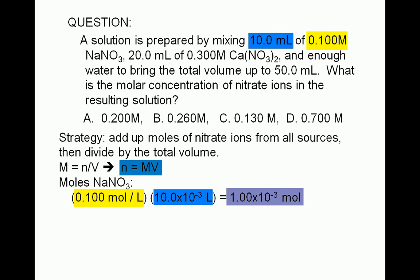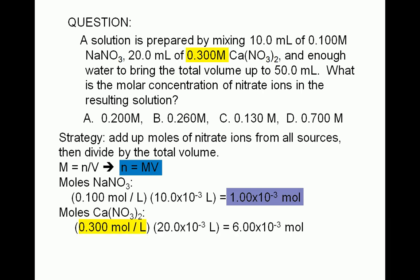Similarly, we can calculate the number of moles of calcium nitrate. It is equal to molarity, 0.300 moles per liter, times the volume, which is 20.0 milliliters, or 20.0 times 10 to the negative 3 liters. This gives us 6.00 times 10 to the negative 3 moles of calcium nitrate.